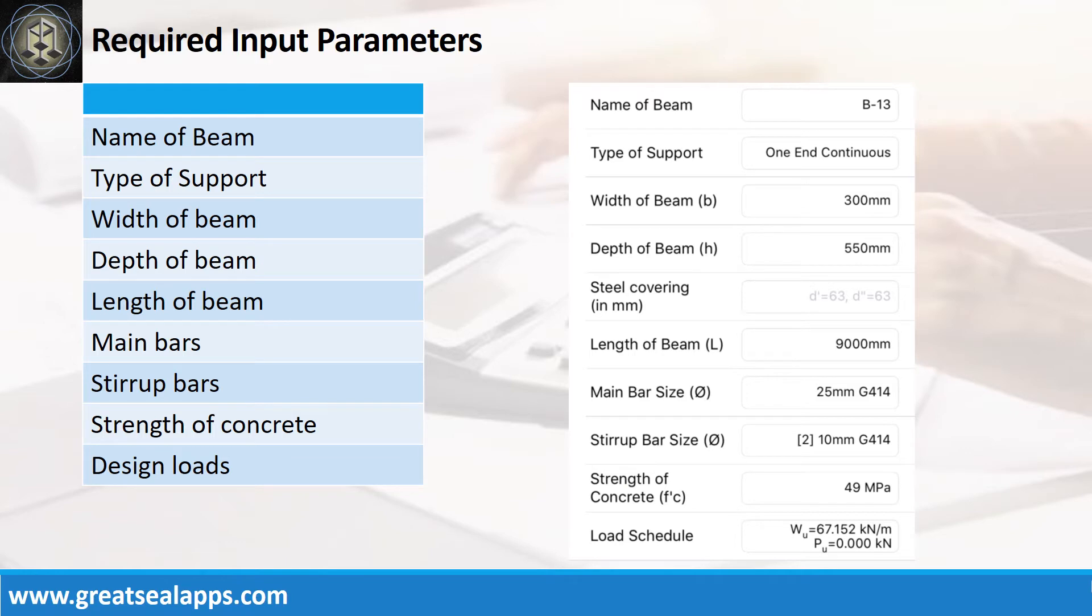Enumerate input parameters required. Name of beam, B13. Type of support, one end continuous. Width of beam, 300 mm. Depth of beam, 550 mm. Length of beam, 9,000 mm.